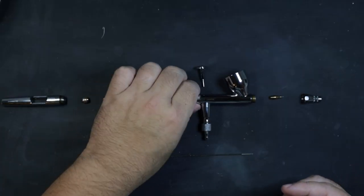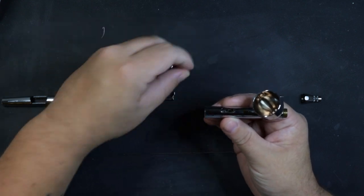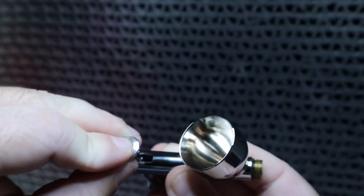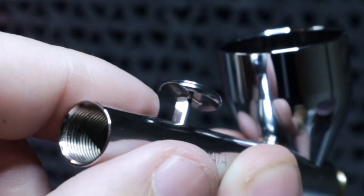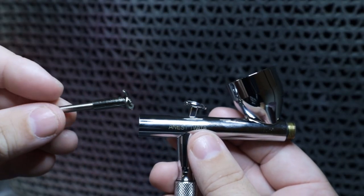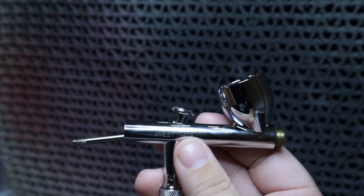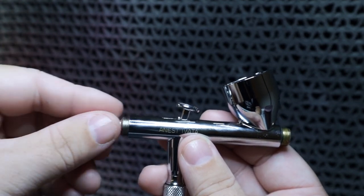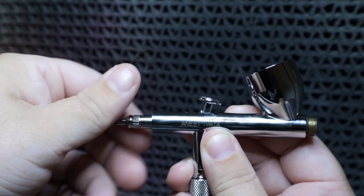Now that the airbrush is clean, we can start with reassembly, starting with the trigger. When reassembling the trigger, make sure the groove on the underside of the trigger faces the back of the body. Once the trigger is seated properly on the valve, we can reinsert our needle guide, our spring, and our spring guide.